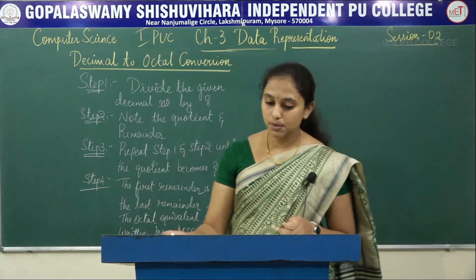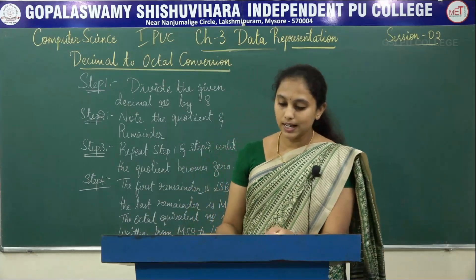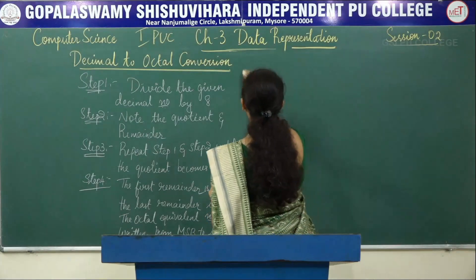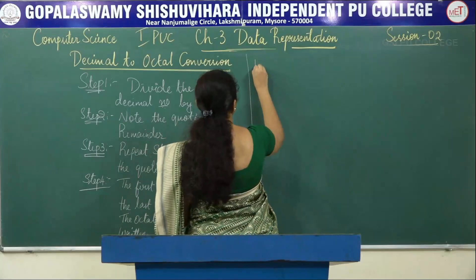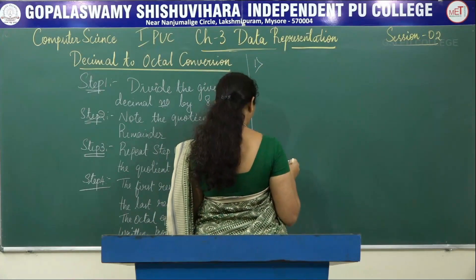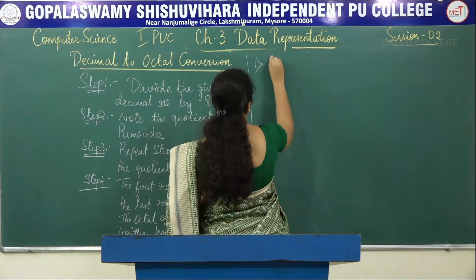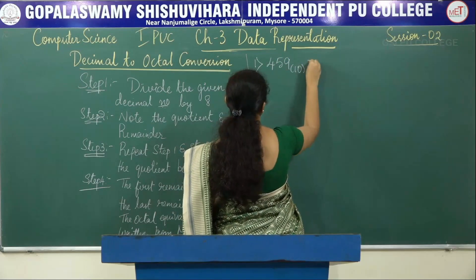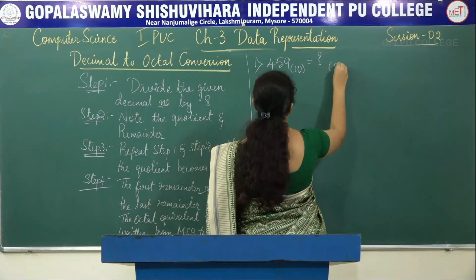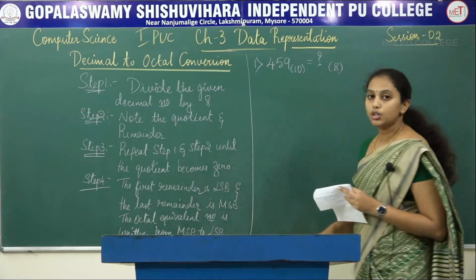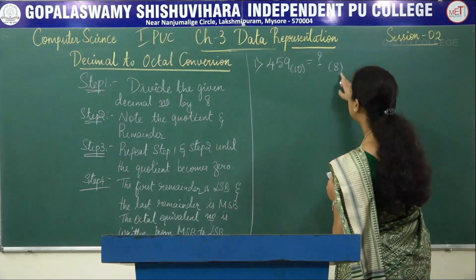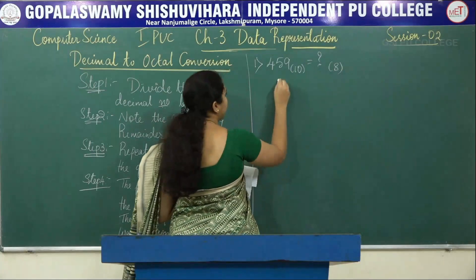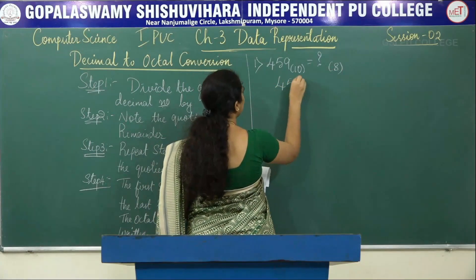Now let's do some problems based on this conversion. The first problem is 459 base 10 — we have to convert it into the octal number system, so the base is 8. The first step is to divide the decimal number by 8.